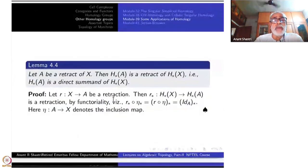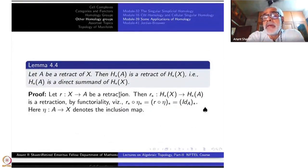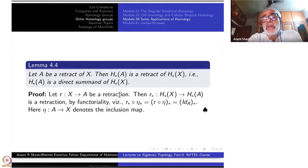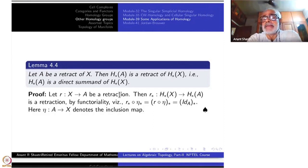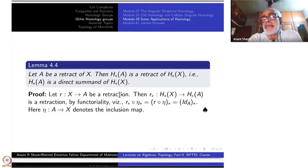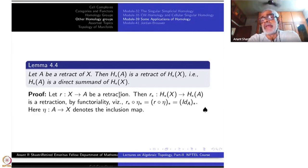We begin with a lemma which is reminiscent of similar things done in Part 1 using the fundamental group. Now we are using the homology group. Let A be a retract of X. Then H*(A) will be a retract of H*(X), that is, H*(A) is a direct summand of H*(X).